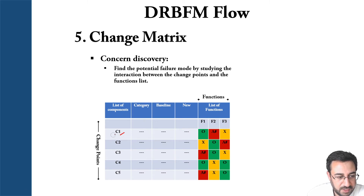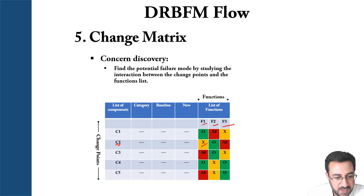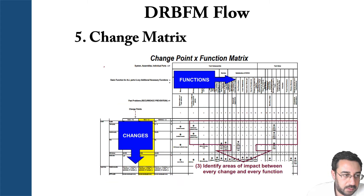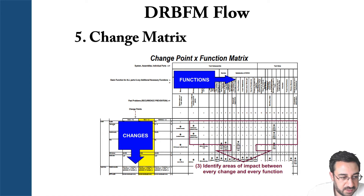For example: how does component C1 interact with function 1, function 2, function 3? How does C2 interact with function 1, function 2, function 3, and so on? Here we can see a screenshot of a real DRBFM sheet showing the change matrix.